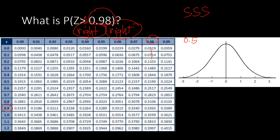We subtract 0.5 by the area equivalent to z = 0.98. Locating 0.9 on the row and 8 on the column header, going down and across, we get the area 0.3365. Subtracting: 0.5000 minus 0.3365 — borrowing as needed — gives us 0.1635.